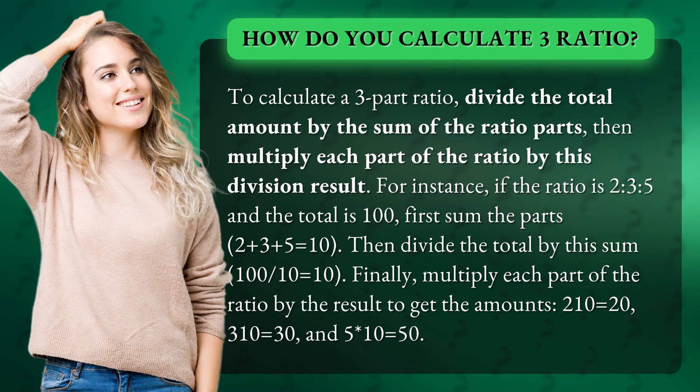For instance, if the ratio is 2:3:5 and the total is 100, first sum the parts: 2 plus 3 plus 5 equals 10.